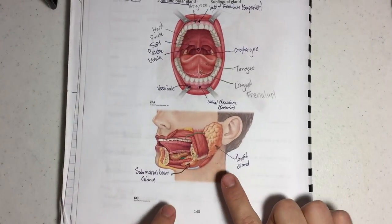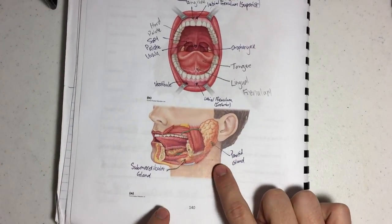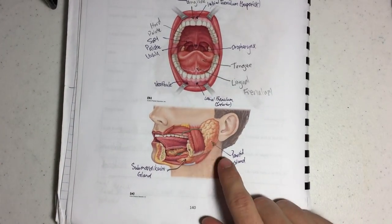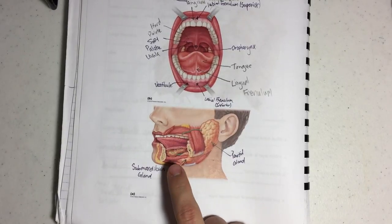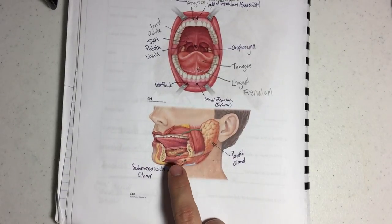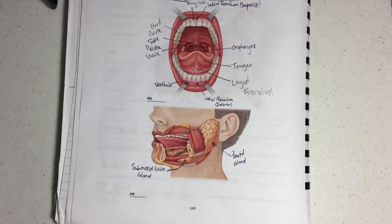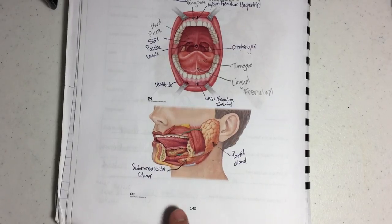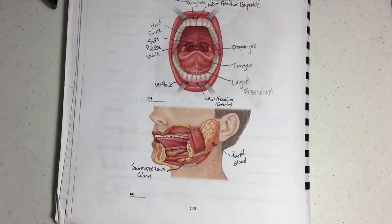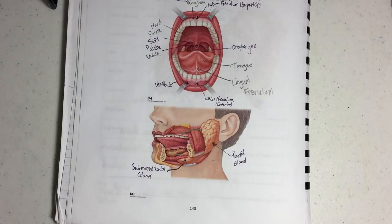Next I want to talk about the salivary glands. There are three of them: the parotid, submandibular, and the sublingual gland. There are two types of saliva that are produced. The parotid and submandibular gland produce serous saliva which is more watery, and then the sublingual gland produces more mucousy saliva — so when your mouth is really sticky, that's coming from your sublingual gland.